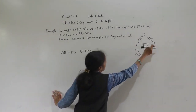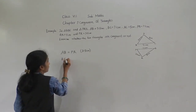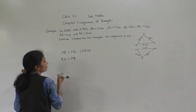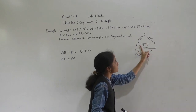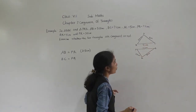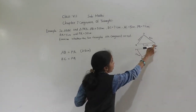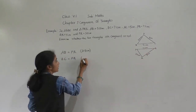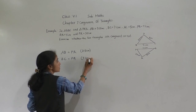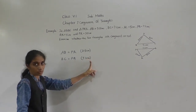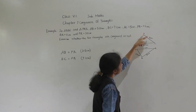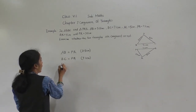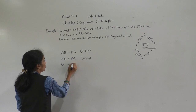Next, BC is equal to PQ. Why BC is equal to PQ? BC is given as 7.1 cm and PQ is also 7.1 cm — they have the same measurement. Then the third side, AC is equal to QR. Why? The measurement of AC is 5 cm, and QR is also 5 cm.